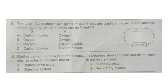Question 9: The given figure shows two gases X and Y that are used by plants and animals during the daytime. Which of these can be X and Y? X is released by plants and Y is released by animals in the daytime. The correct answer is option C.